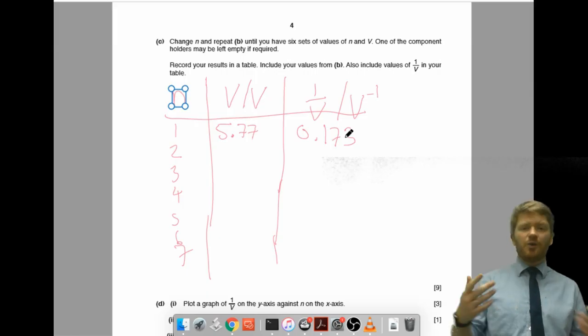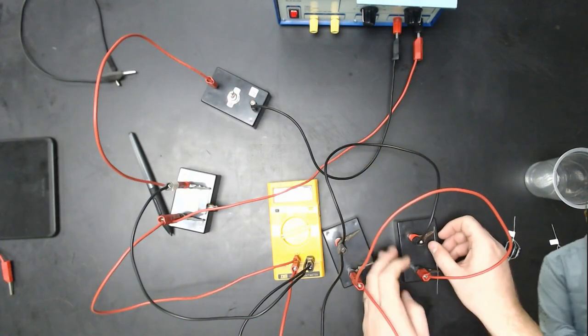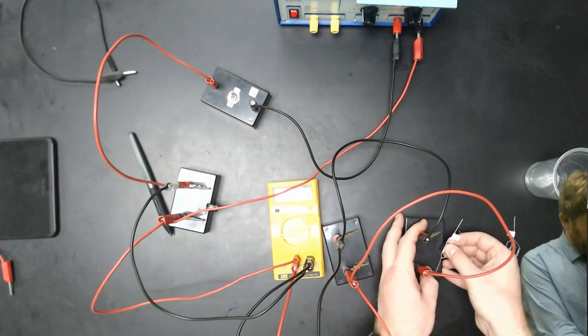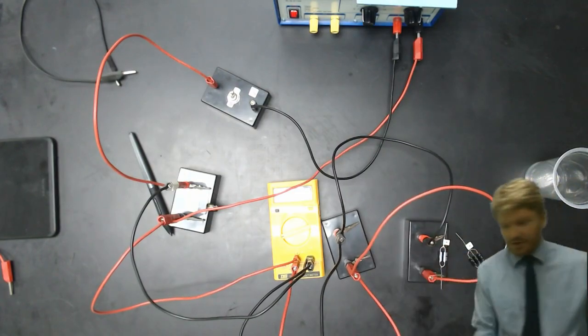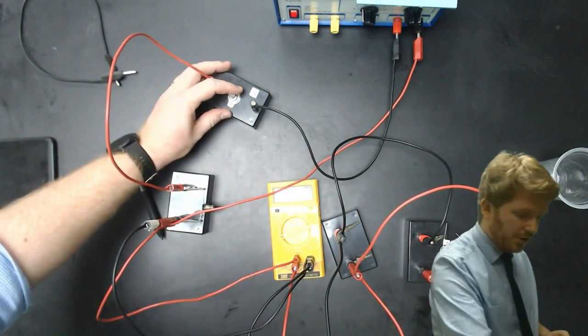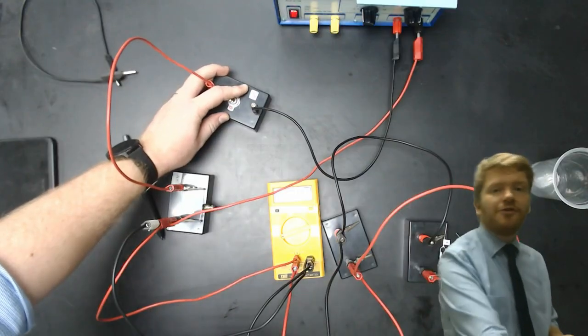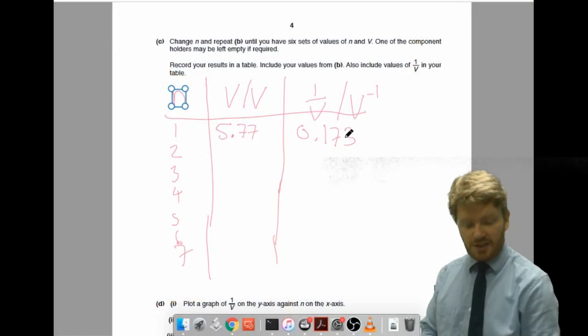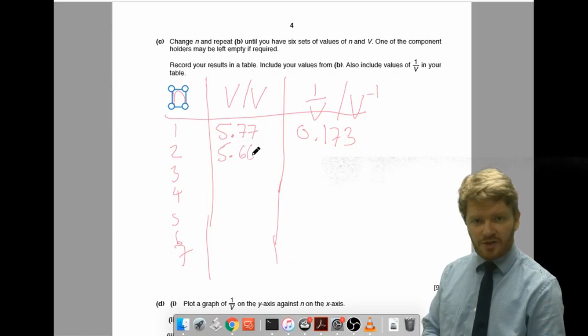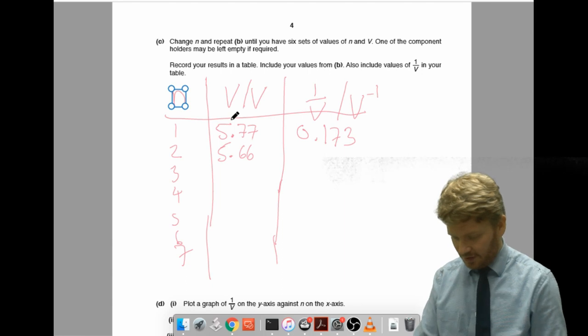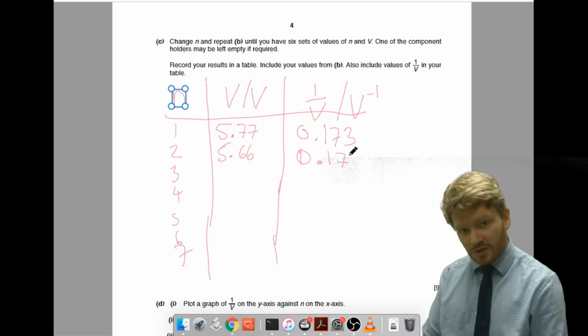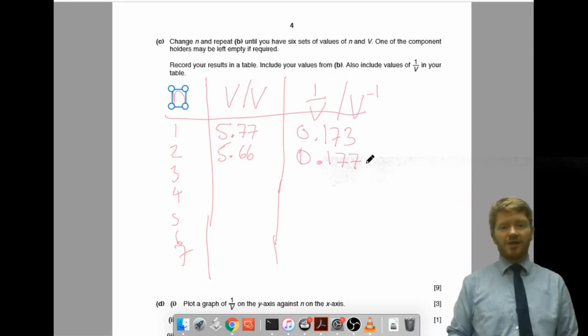I'm just going to go ahead and I'll do one more just to show you the idea. So, now I want two together. Again, I'm just leaving this one empty because I can. And I've got two in parallel here. So, let's connect that one in there. And then I'm going to repeat the same procedure. So, plug it into B. Close the switch. 2, 3, 4, 5. Open it again. Connect it to A. And that's 5.66. So, in here goes the value 5.66. And 1 divided by 5.66 comes to 0.177. Again, be consistent with the number of decimal places. Okay. Cue the crazy montage. And I'm going to just fill up the rest of these.